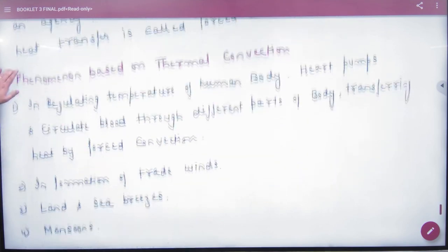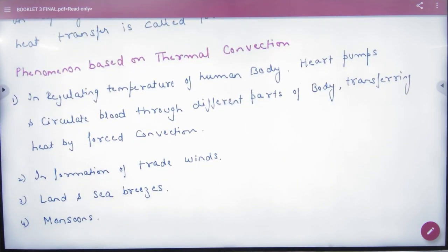What are phenomena based on thermal convection? In regulating temperature of the human body, the heart pumps and circulates blood through different parts of the body, transferring heat by forced convection. Our body temperature is maintained. What is the heart doing? It is circulating blood.